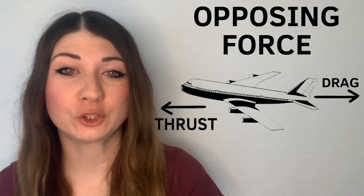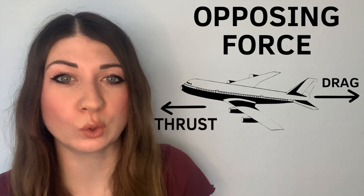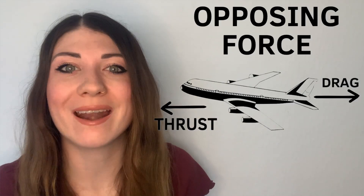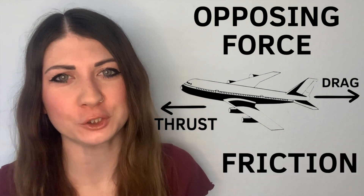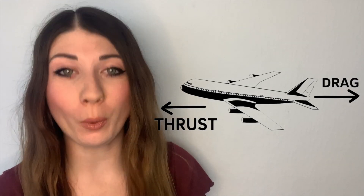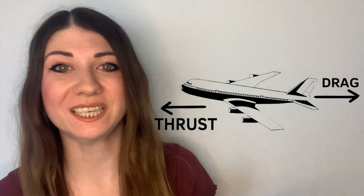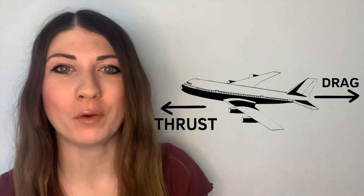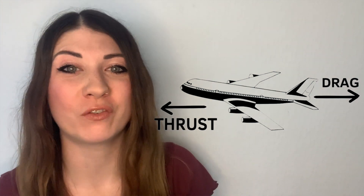Drag is the opposing force to thrust and acts as a friction, so it works in the opposite direction to thrust and resists the motion of the plane moving forwards through the air. Let me give you an example of drag that you might have experienced yourself.